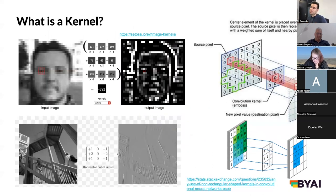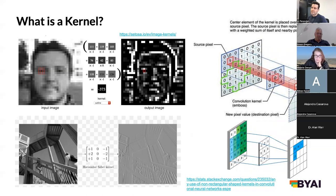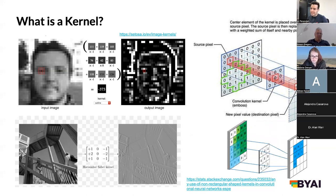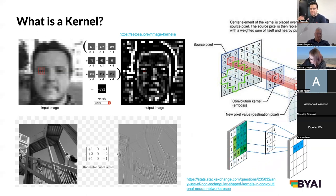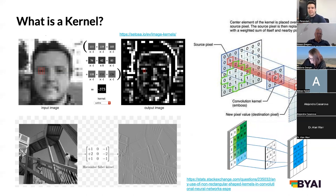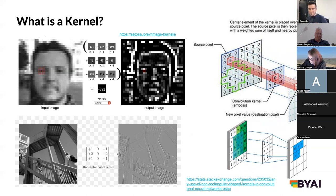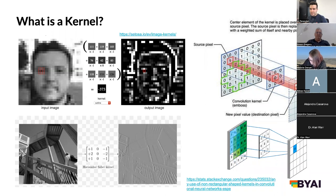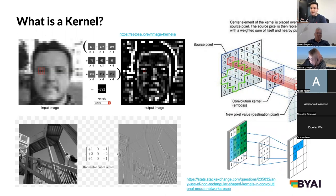For example, you can pass an outline filter through an input image and create an output image with edges heightened. Passing these heightened images through the network allows the network to figure out patterns in the data. In the early layers of the convolutional network, the network starts to learn patterns by creating these filters. As you go deeper, the network combines these patterns to understand actual features of the data.